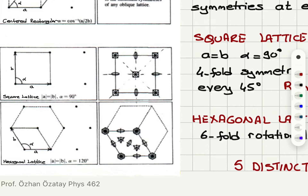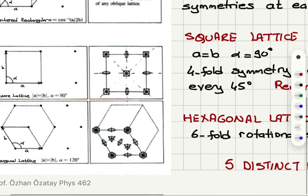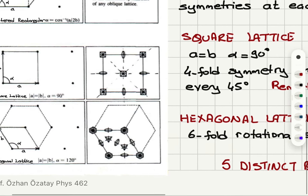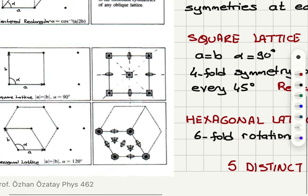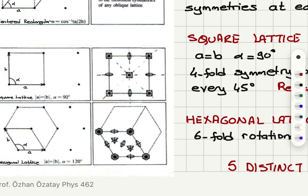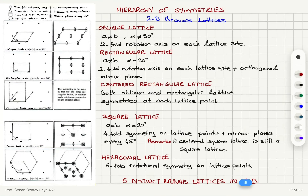For the hexagonal lattice, a equals b but alpha, the angle between a and b, is 120 degrees. This has sixfold rotational symmetry on each lattice site and mirror planes at every 30 degrees.